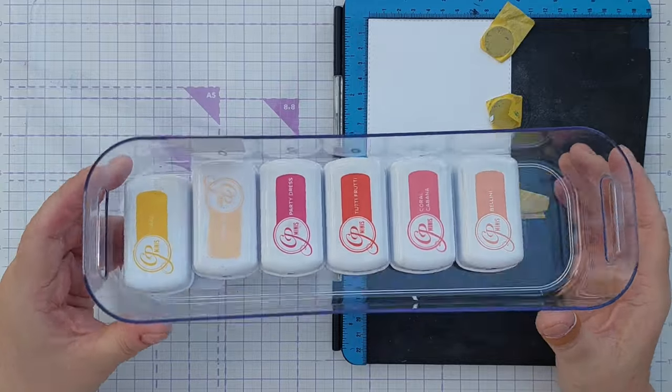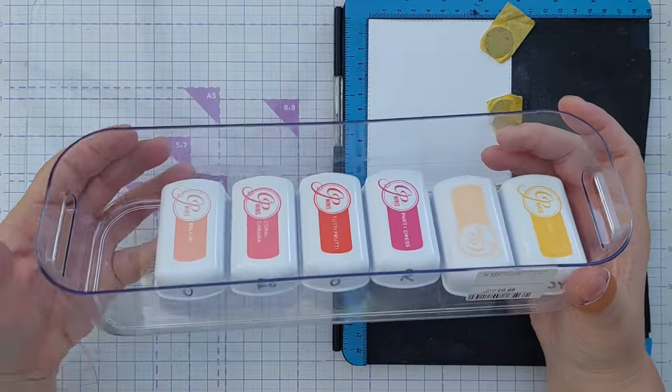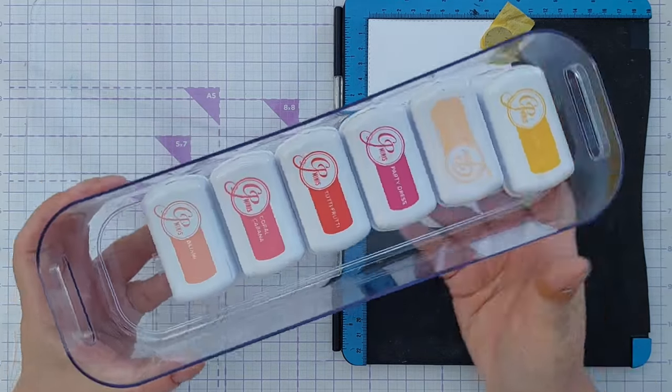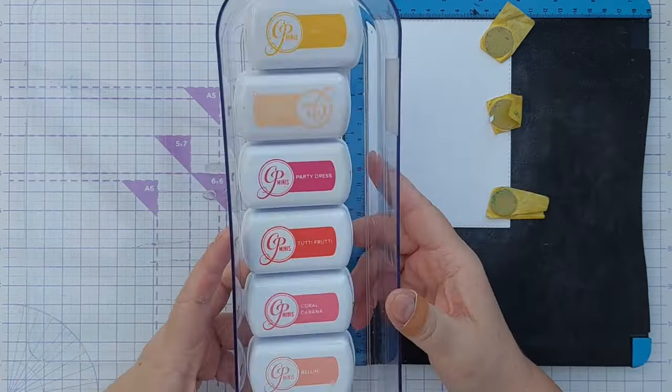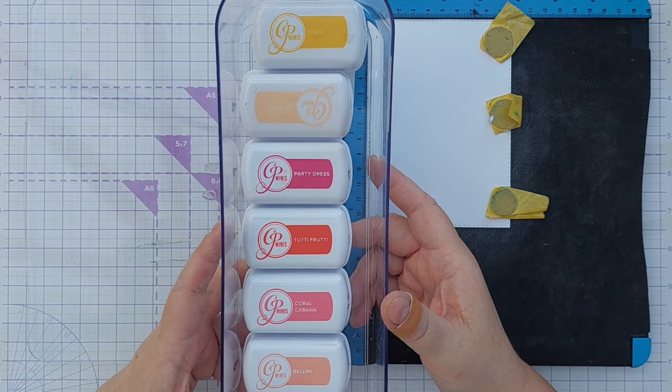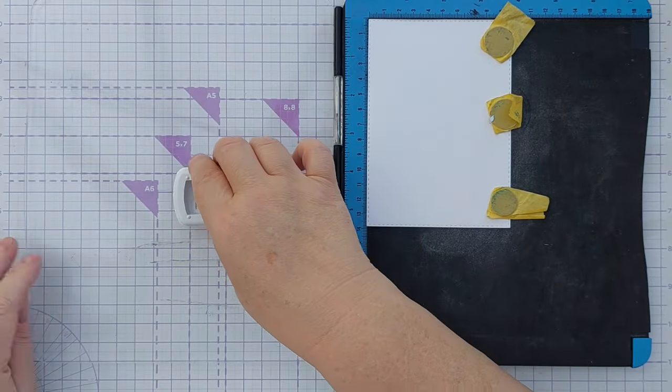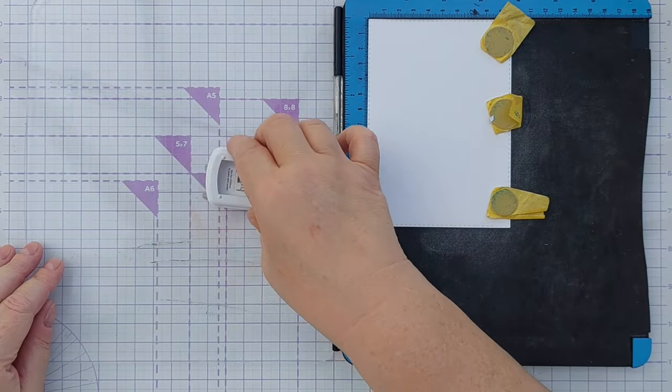For my stamping today I'm going to use Catherine Pooler inks. These are all reds, oranges, orange yellows, and they're from the party collection. These are the bright ones, so they're great for party birthday candle theme cards. And I'm just going to ink up my stamps.